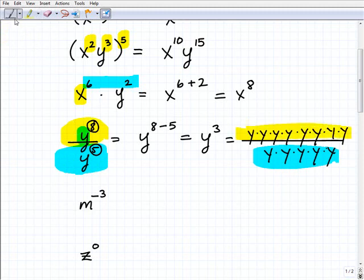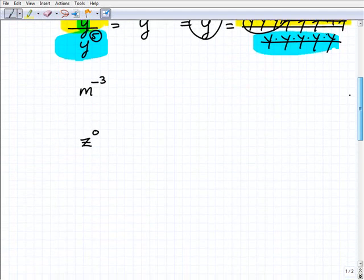So what we're doing really with this property is just cross canceling five y's with one, two, three, four, five y's right here. And we're left with how many y's? Well, we're left with three or y times y times y, which is the same thing as y cubed. So another property of exponents.